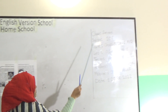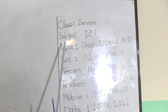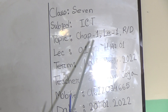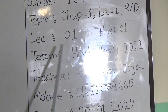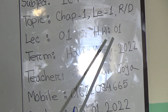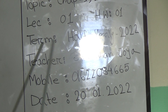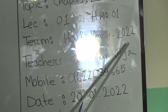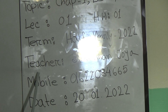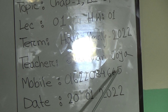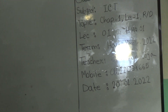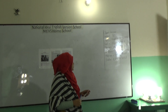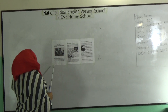Look at the board, my students. This is Class 7, subject ICT, topic Chapter 1, Lesson 1, reading term. Your lecture number is 1 and homework number 1, term hopefully 2022. The teacher's name is Sonia Khan Joya. Let's start our today's topic. Look at the board.